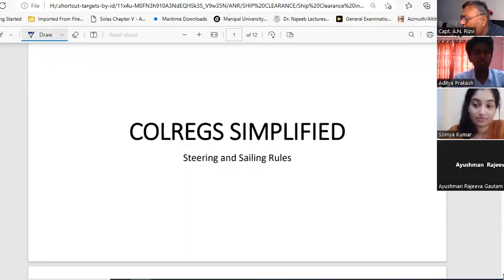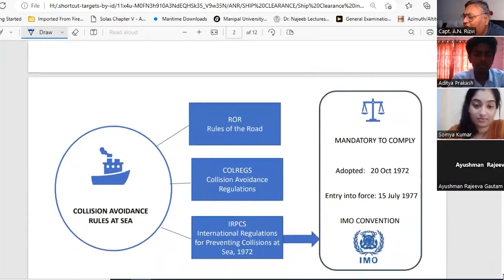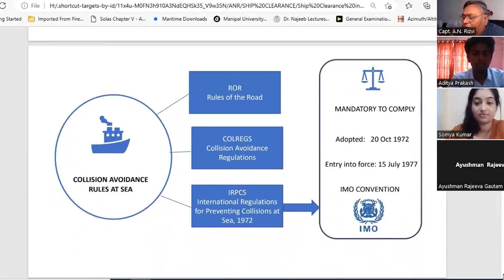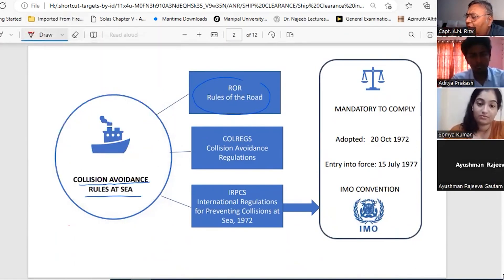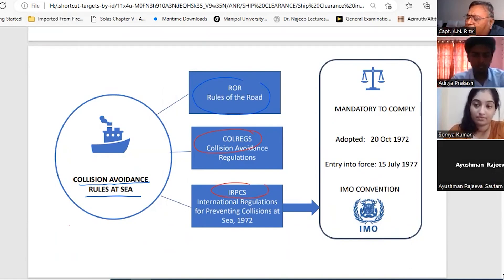So let me start describing about the COLREG. First of all, Collision Avoidance Rules at Sea. There are various names - you can call them ROR, or we can call them COLREG, or we can call them IRPCS. IRPCS stands for International Regulations for Preventing Collisions at Sea 1972.